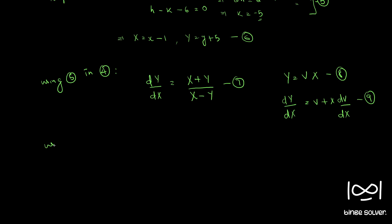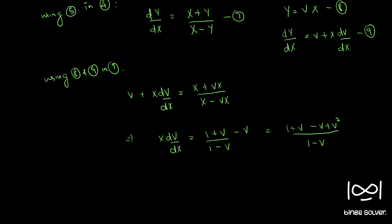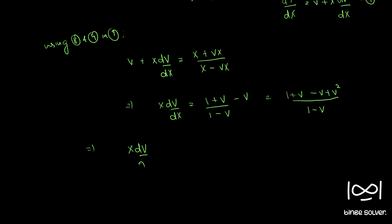Using equations 8 and 9 in equation 7, we have v plus X·dv/dX equal to (X plus vX) by (X minus vX). Canceling X from numerator and denominator and bringing v to the other side, we get X·dv/dX equal to (1 plus v)/(1 minus v) minus v, which simplifies to (1 plus v squared)/(1 minus v), since the v terms cancel.